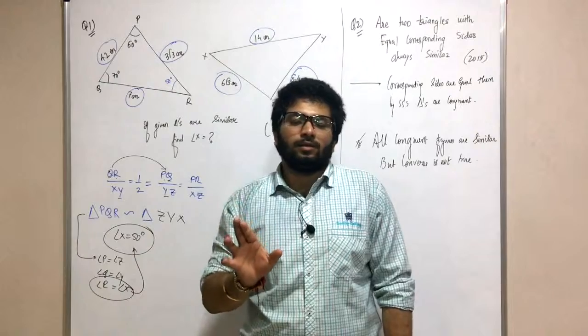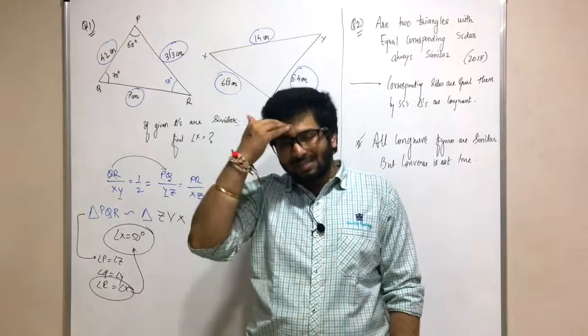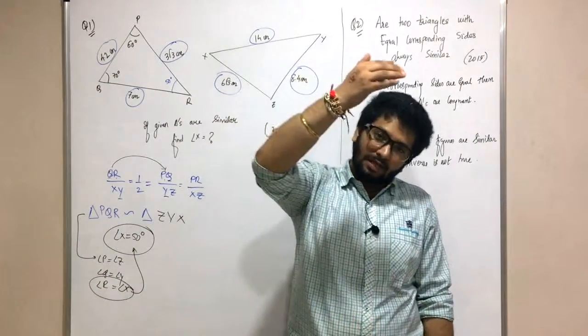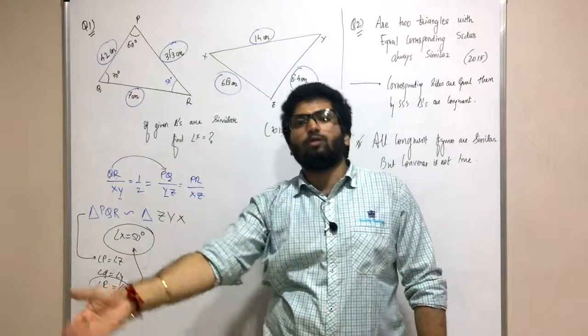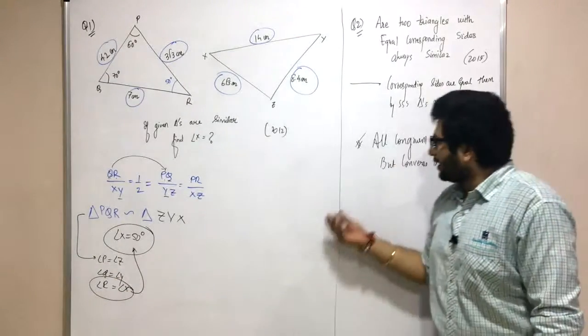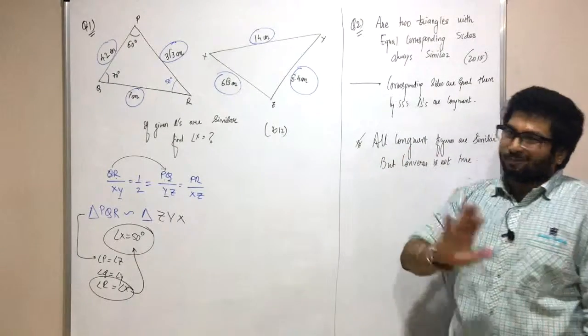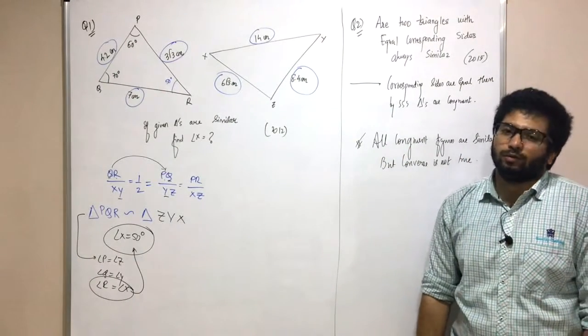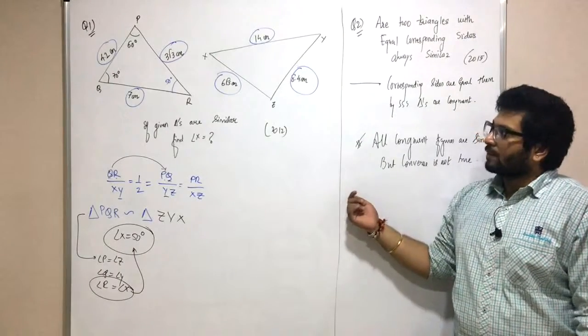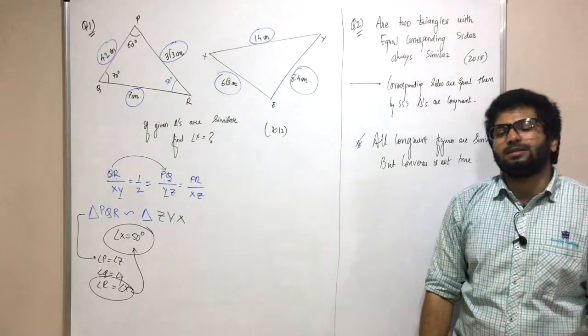If it is similar, I cannot say that it is congruent. So similarly I can say that if it is congruent, then for sure it is similar, my friend. But if it is similar, I cannot say that it is congruent. Take care, so note this down. Then we'll be going for the next part that is nothing but Thales theorem.